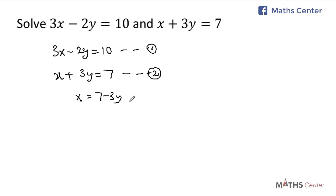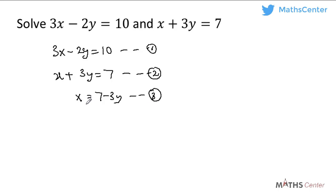This is a new equation, let's call it equation 3. Now I have x as the subject. I made x the subject from equation 2 and so I will substitute x into equation 1. From equation 1 we have 3x minus 2y equals 10, but we now know that x equals 7 minus 3y, so I will replace x in equation 1 with 7 minus 3y.